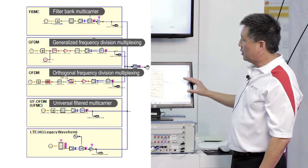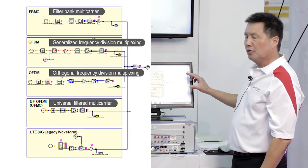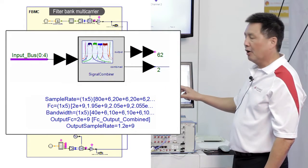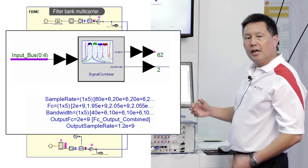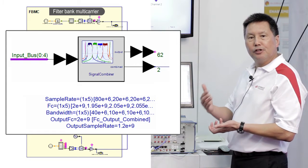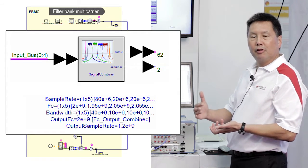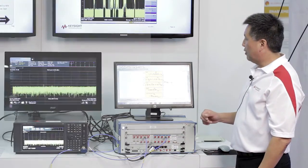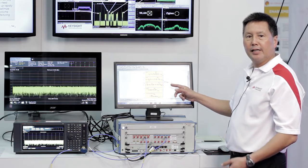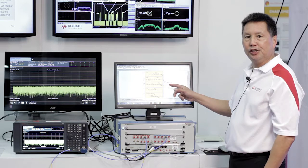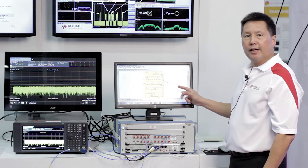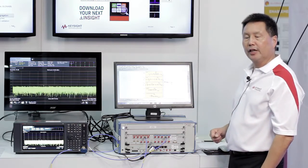Each of these waveforms is being simulated at different frequencies and different bandwidths. The key here is to use a signal combiner element, which is essentially an arbitrary resampler. It takes multiple input signals, combines them together, and resamples them — the user specifies an output sample rate. We've combined the waveforms into a composite waveform that has been configured for our M8190 AWG.